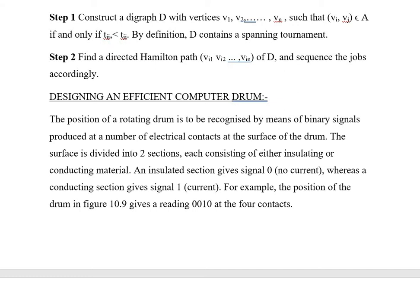The second application is designing an efficient computer drum. The position of a rotating drum is to be recognized by means of binary signals produced at a number of electrical contacts at the surface of the drum. The surface is divided into sections, each consisting of either insulating or conducting material. An insulated section gives signal zero (no current), whereas a conducting section gives signal one (current).